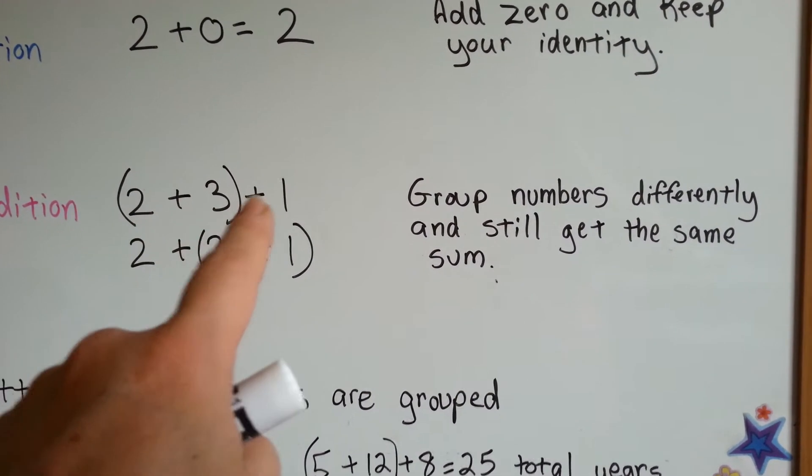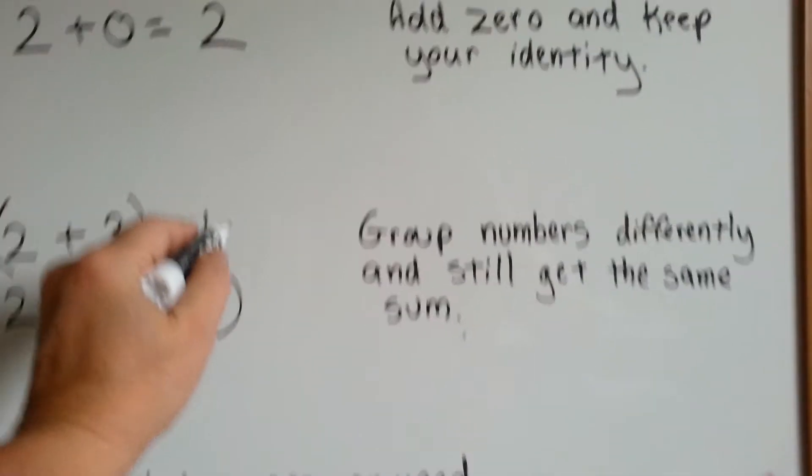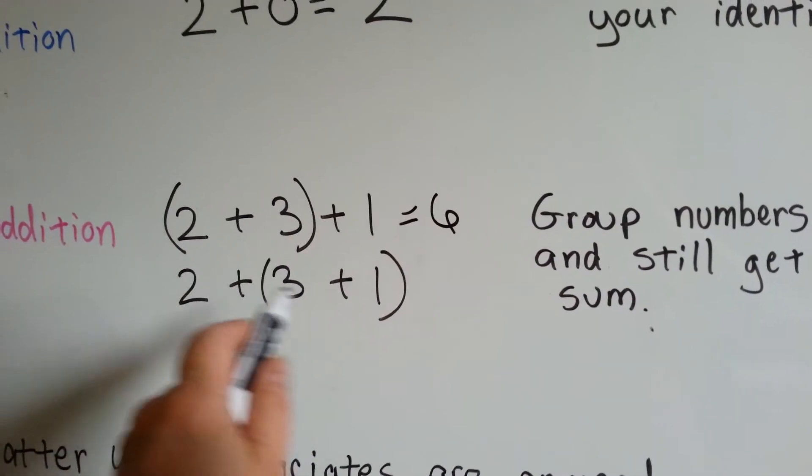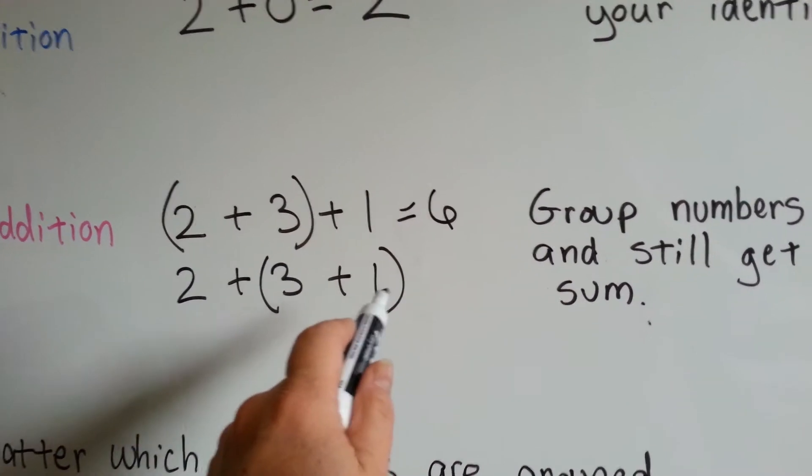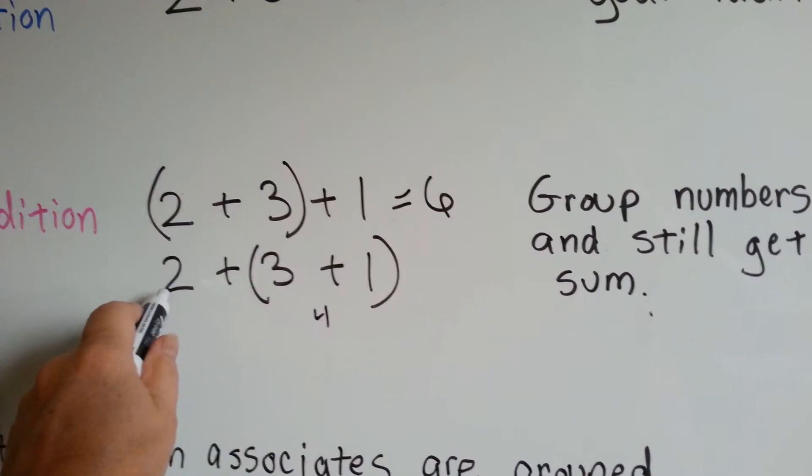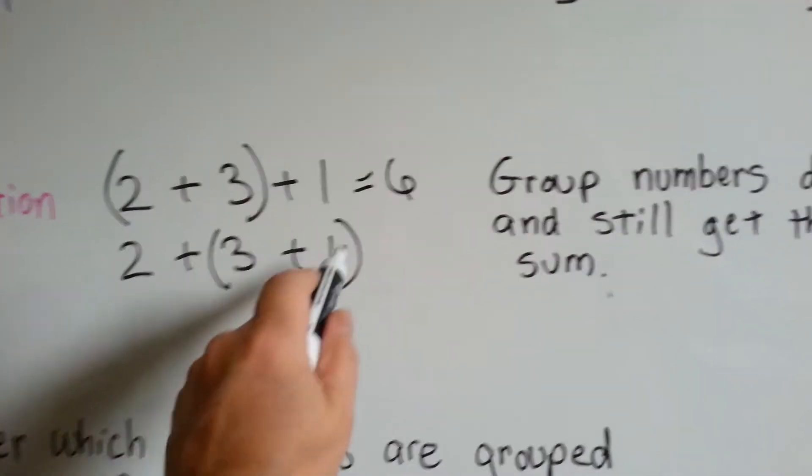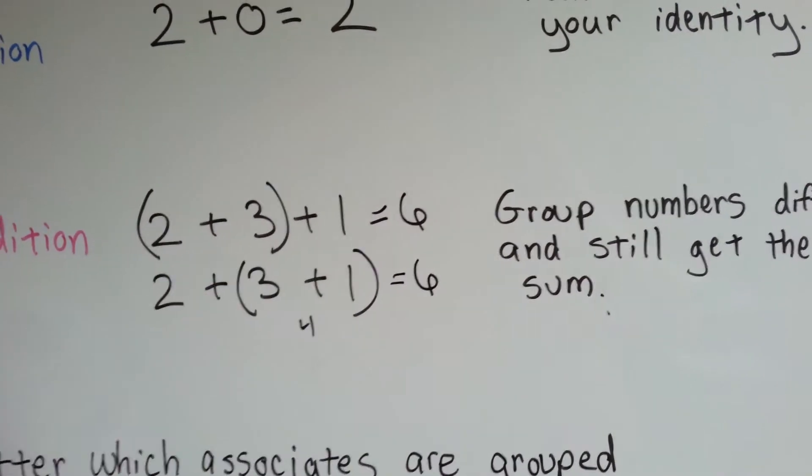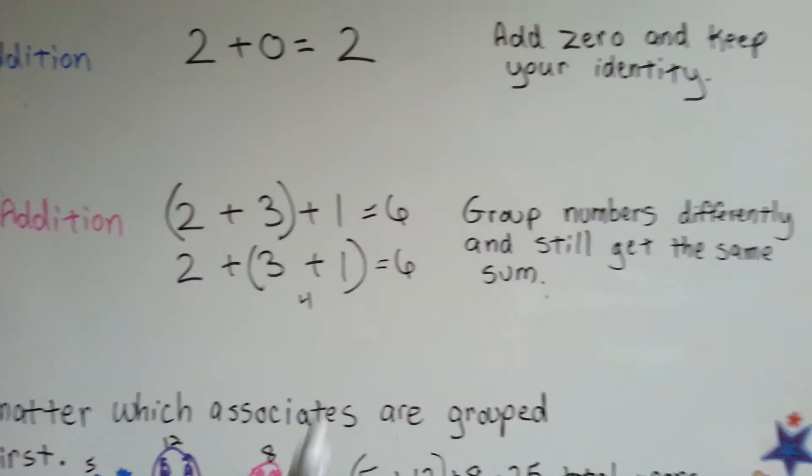2 plus 3 is 5, and then add 1, it'll equal 6. Right? But if you add the 3 plus 1 first, which is 4, and then you add the 2, it'll still equal 6. So it doesn't matter which ones you group together, it's still going to equal 6.